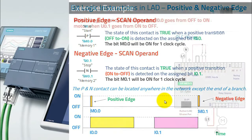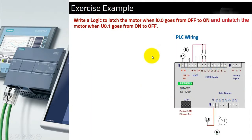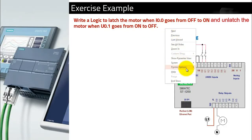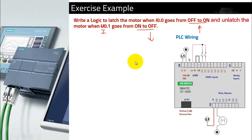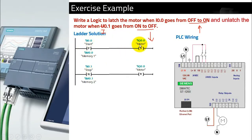The example question: write a logic to latch a motor when I0.0 goes from off to on, and unlatch the motor when I0.1 goes from on to off. So I0.0 is a positive edge and I0.1 is a negative edge. The solution is simple: use a positive edge to set the motor and a negative edge to reset it, since the set command needs a pulse.